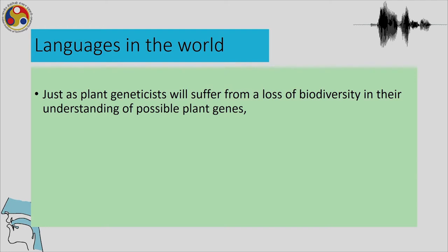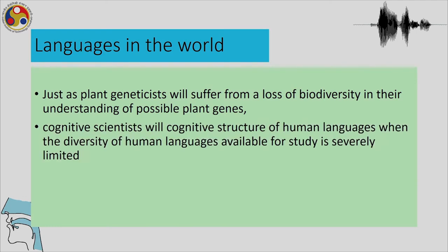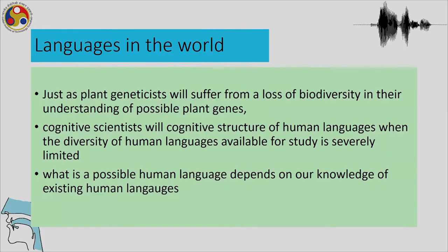Just as plant geneticists suffer from the loss of biodiversity in understanding possible plant genes, cognitive scientists of human language will also have to deal with lesser diversity in languages, and the range of available languages to study will be severely limited. This will be detrimental because our knowledge of what language is — and the possible languages a human cognitive system can produce — depends on this diversity, and those considerations are important to understand our human cognitive abilities.